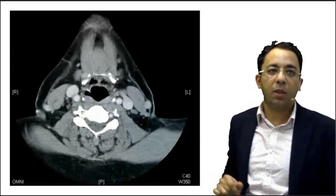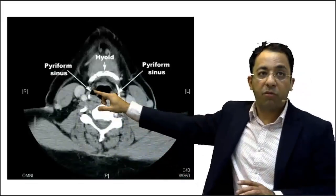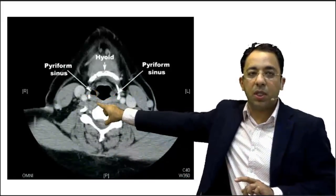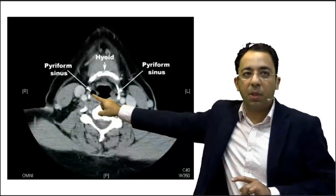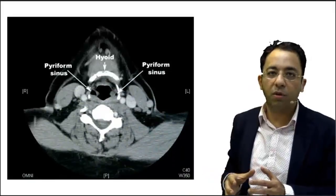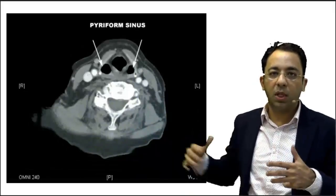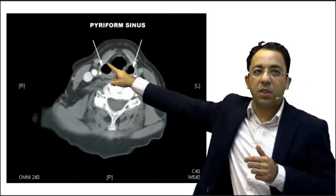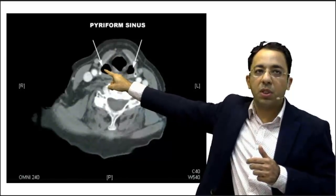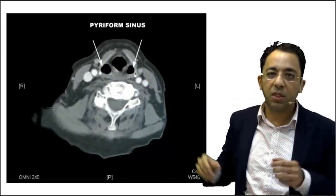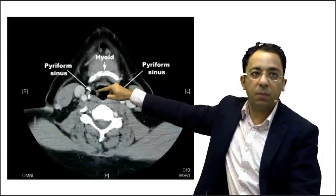Going down through the sections from the epiglottis, you can see these folds going downwards — these are the aryepiglottic folds. You can see an area being marked between the thyroid laminae and the aryepiglottic fold, which is called the piriform sinus. This is how the thyroid laminae look on CT, and here is your aryepiglottic fold. This clearly distended space here is the piriform sinus.